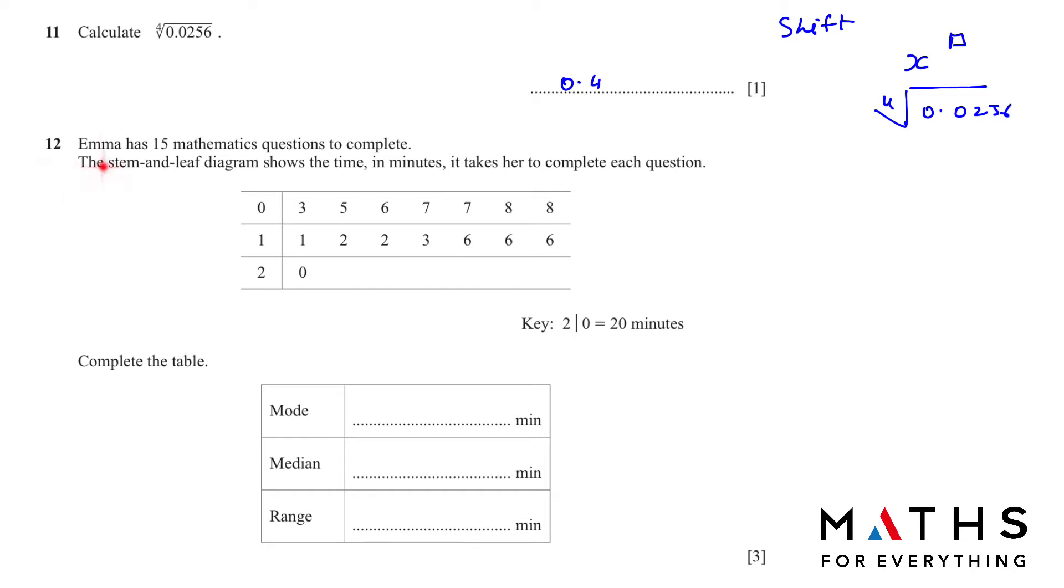Question number 12: Emma has 15 mathematics questions to complete. The stem and leaf diagram shows the time in minutes it takes her to complete each question. The key has been given to us: 2|0 is 20 minutes. Complete the table.